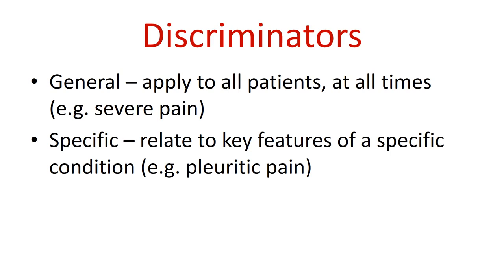It's useful to think about general discriminators and specific discriminators. General discriminators apply to all patients at all times — for example, severe pain is a general discriminator. Specific discriminators relate to key features of a particular condition; for example, pleuritic pain is specific to conditions involving the pleural membranes, such as pleurisy, pneumonia, or penetrating chest injury. General ones apply to all patients at all times; specific discriminators relate to specific conditions.